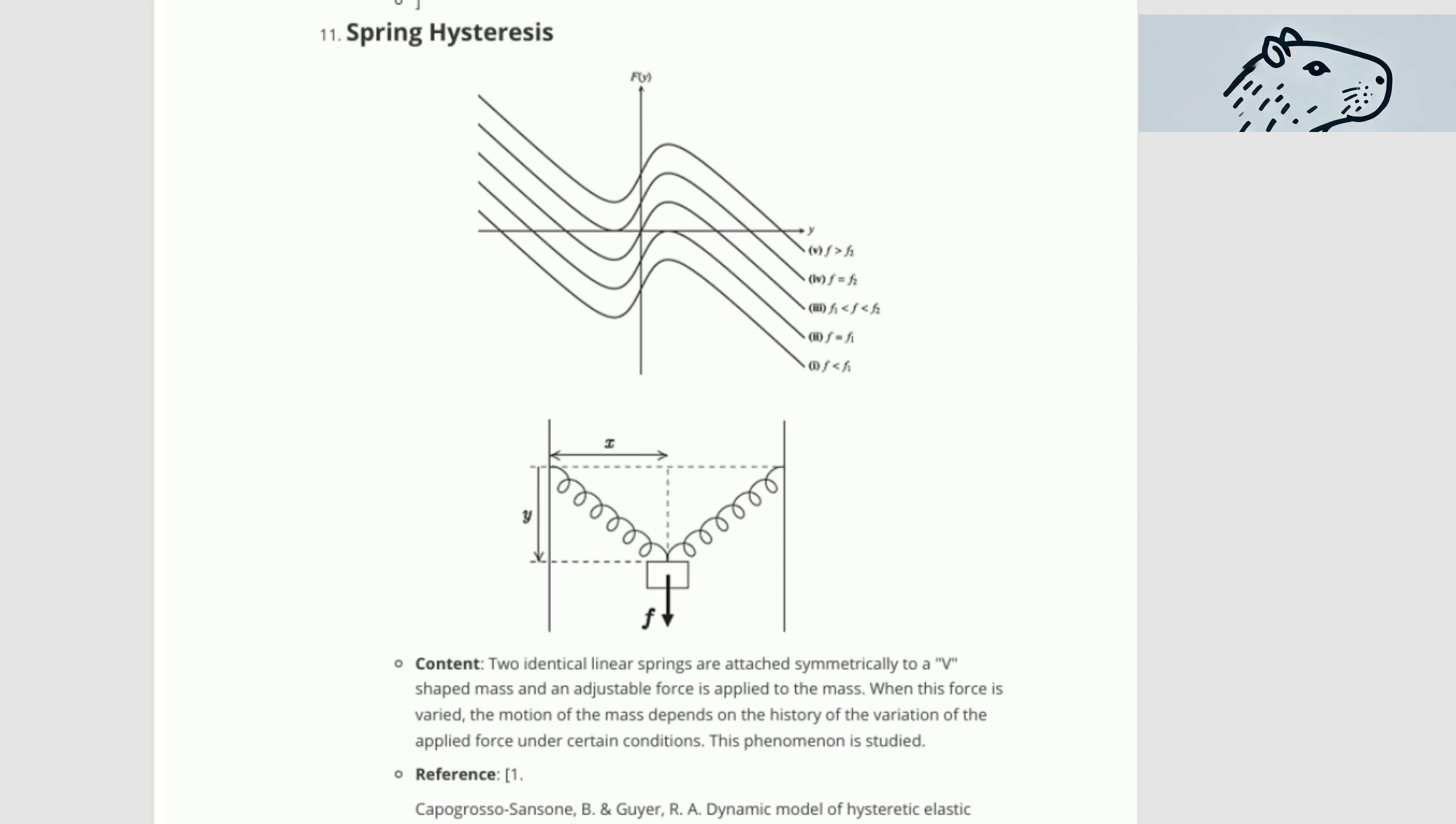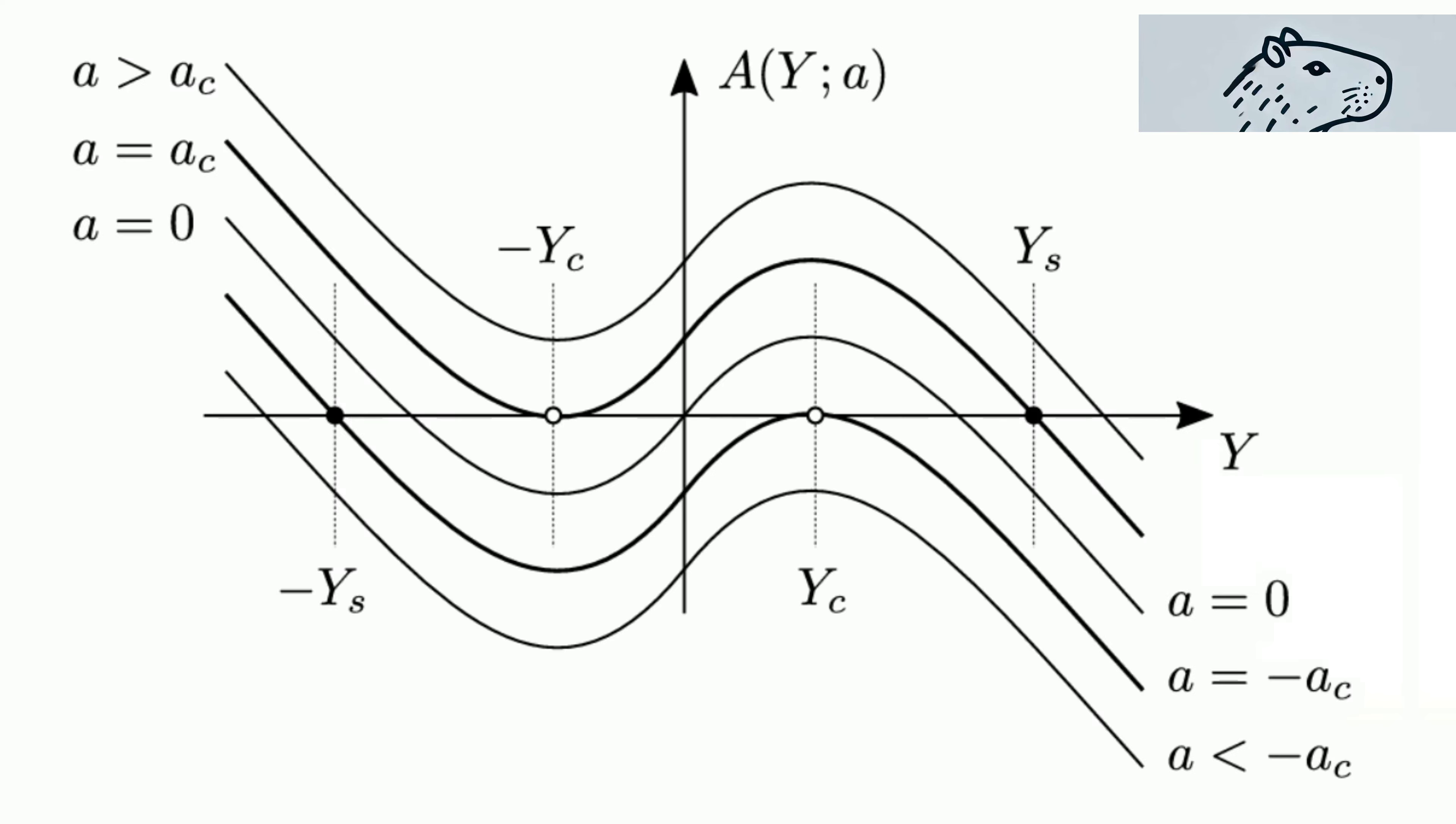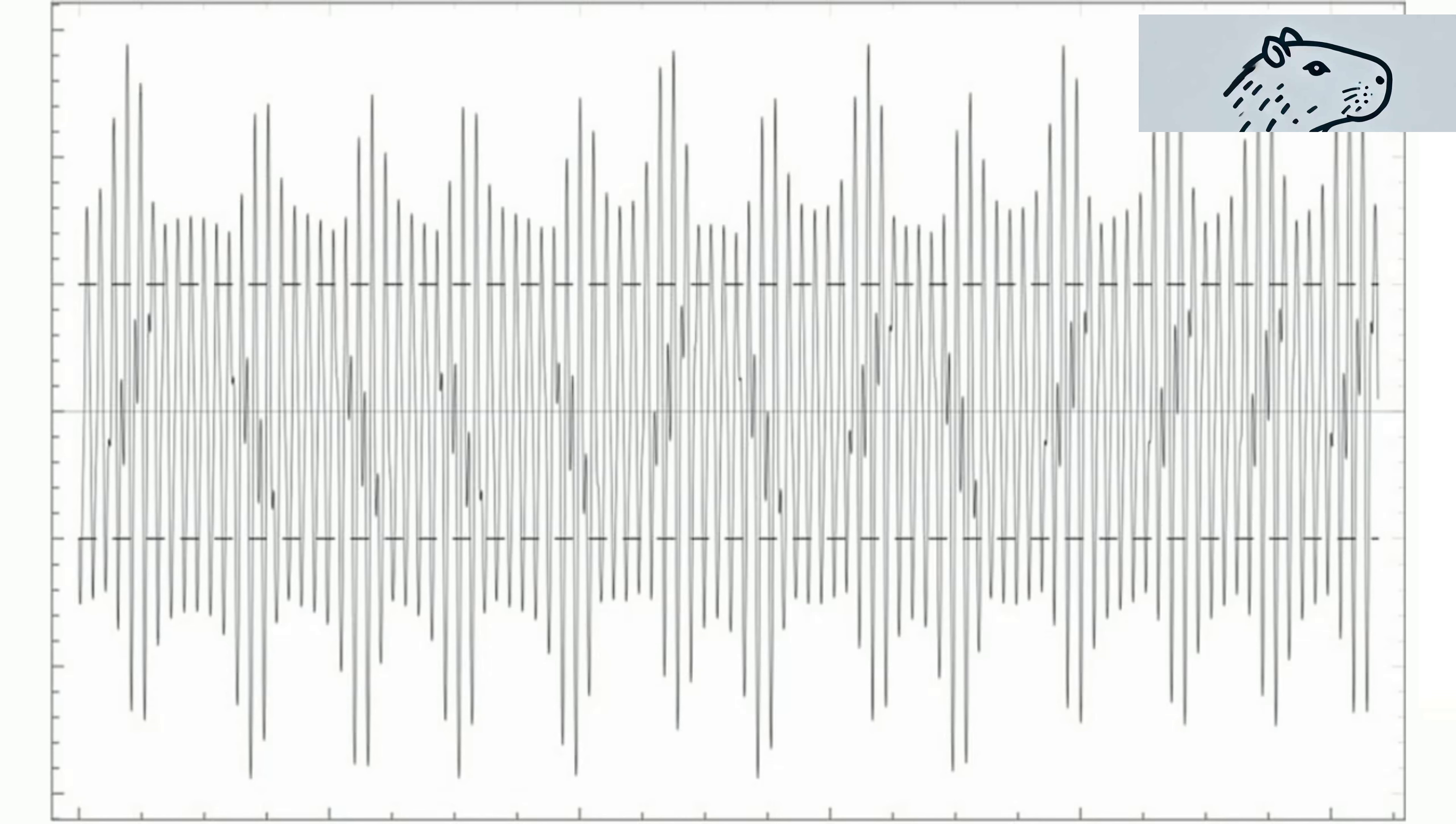Imagine a system where two identical linear springs are symmetrically attached to a V-shaped mass, and an adjustable force is applied to this mass. Under certain conditions, varying this force leads to fascinating motion patterns that depend on the history of the force variation.